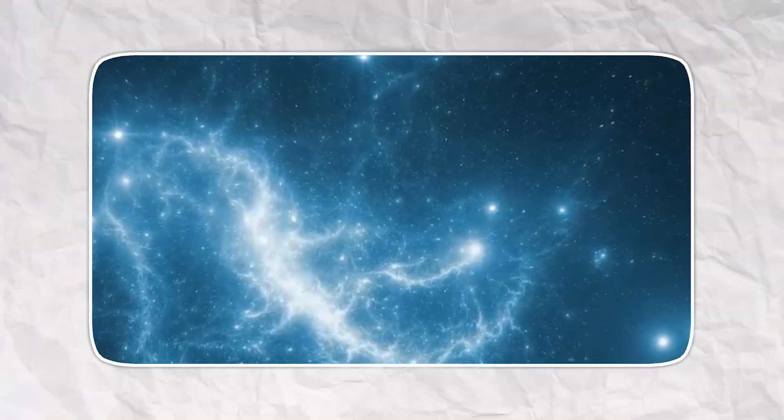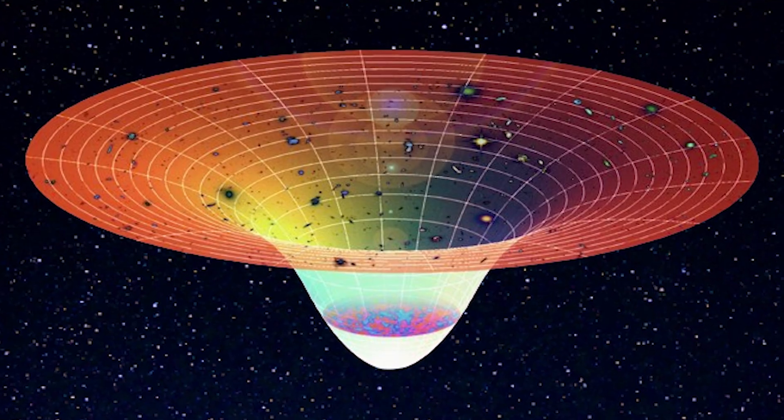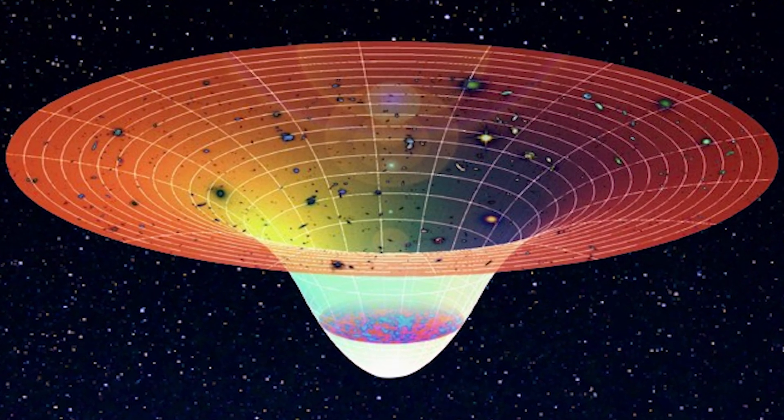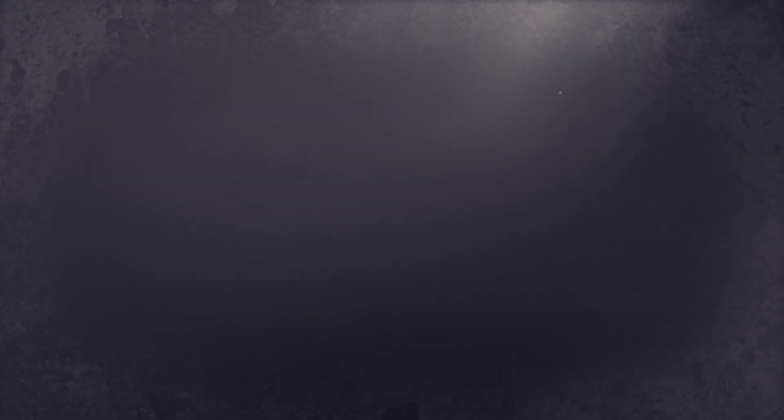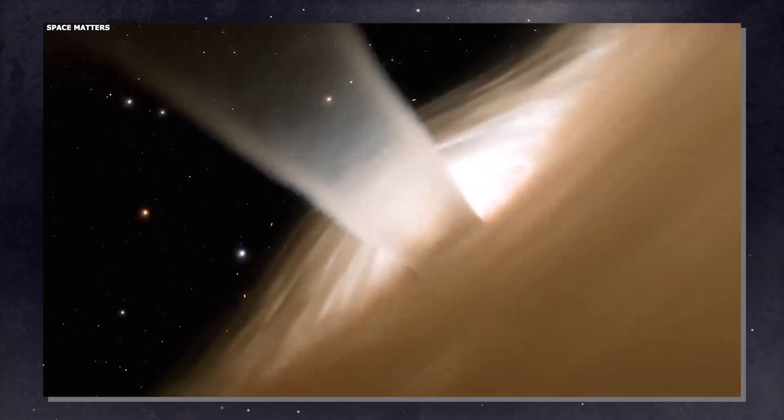According to Lambda CDM, there simply hasn't been enough time for galaxies this large to form. Remember that slow merger process, the one that takes hundreds of millions of years? These galaxies skipped that entire process and went straight to being giants.